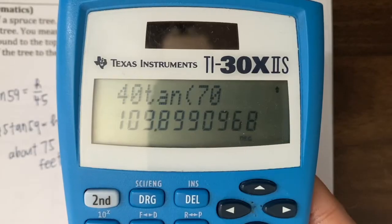I get tangent of 70 is equal to h over 40. And let's cross multiply. I get 40 times tangent of 70 is equal to h. And let's put that into our calculator. And you get 109.89. We need to round to the nearest inch, so this is going to round to 110.